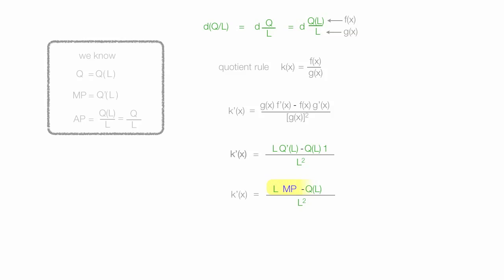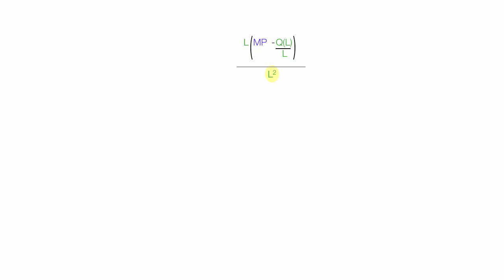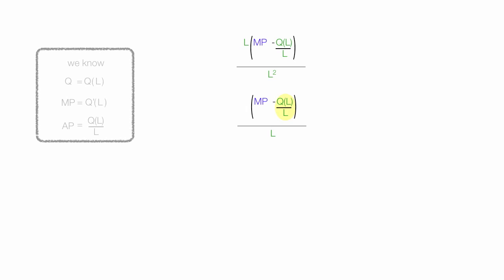Now I'm going to focus on the top part of this equation. I can factor out that L by dividing by L, and the whole thing is divided by L squared — so one of those L's cancels out. I take marginal product minus q over L, divided by L. That little area, q over L, is equal to average product. So I can rewrite this as 1 divided by L, times the quantity marginal product minus average product. This is the first derivative of the average product curve.